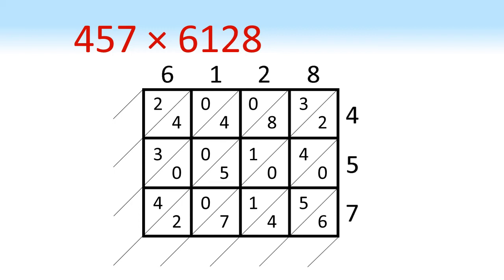We now go through our diagonal strips, adding the numbers in those. So the first one at the bottom right is just a 6. Second strip: 0, 5 and 4 make 9. We then have 2, 4, 1 and 7 which gives us 14. So put the 4 in, carry the 1 to the next strip.